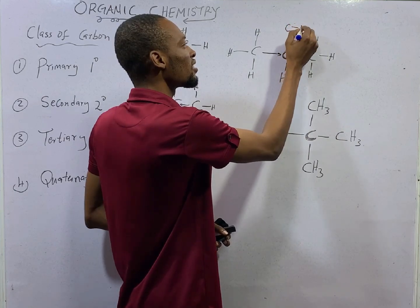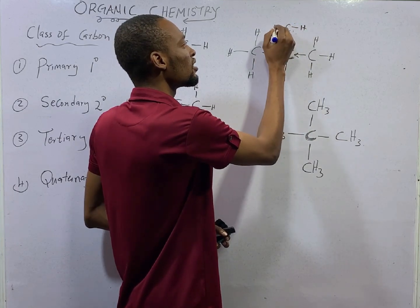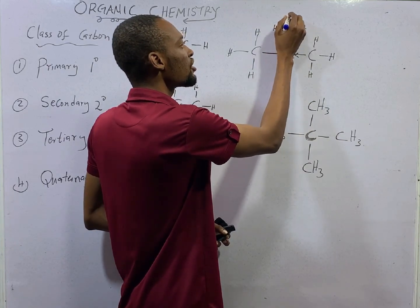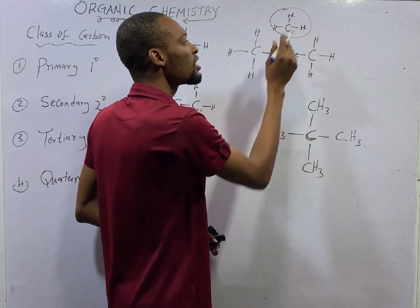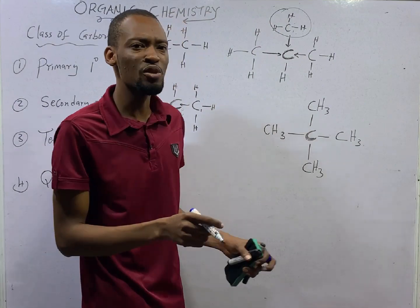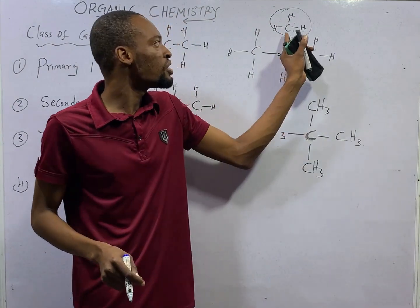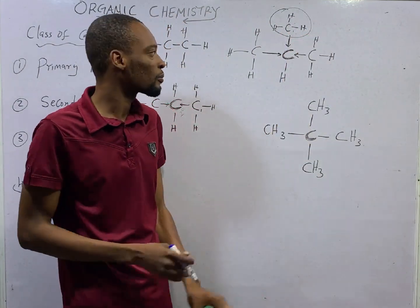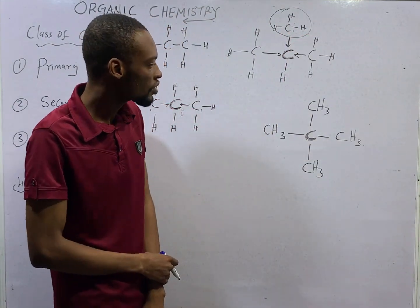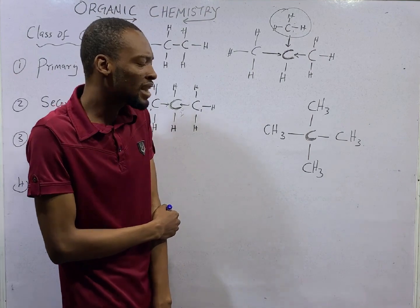You can rewrite CH₃ as a methyl group. This is a methyl group — methane with one hydrogen removed. Similarly, we now move to quaternary carbon.